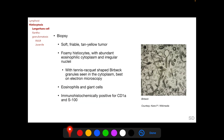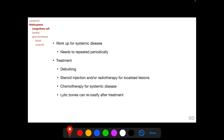On biopsy, a soft friable tan-yellow colored tumor is found with foamy histiocytes having abundant eosinophilic cytoplasm and irregular nuclei. On electron microscopy, tennis racket-shaped Birbeck granules are found in the cytoplasm of these foamy histiocytes. In addition, eosinophils and giant cells are also found, and tumor tissue is immunohistochemically positive for CD1A and S100. Following diagnosis of LCH on biopsy, a workup for systemic disease is warranted and should be repeated periodically. Treatment options include debulking, steroid injection, and/or radiotherapy for localized lesions, chemotherapy for systemic involvement; lytic bone lesions can re-ossify after treatment.